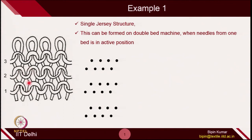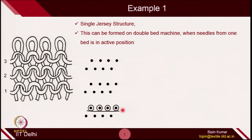The fabric is making technical back side, and technical back side is produced only by the back bed. The back bed is represented by the top set of needles. In each row, the top set represents the back bed and the bottom set represents the front bed. In the first course, only the back bed needles are making loops - the front bed is idle. This is how you create single jersey structure on a V-bed or double bed machine.